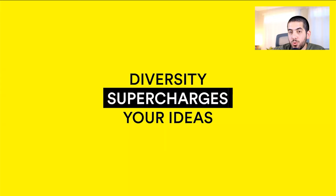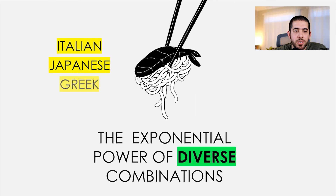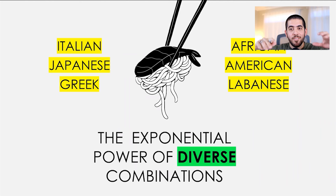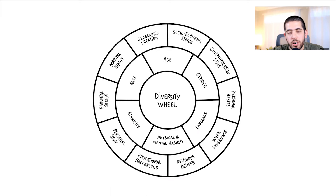Diversity supercharges your ideas. For example, if you're a chef with an Italian dish, a Japanese dish, a Greek dish — six different dishes — the combinations become exponential. Six different dishes can give you over 80 or 90 different combinations. Imagine bringing things that are not related to each other and mixing and matching to come up with cool concepts. Same thing when putting a team together: the more diverse it is, the more innovation happens. It's been proven through studies — it brings different perspectives and ideas to the table when people come from different races, ages, genders, languages, religions. The more diverse you are, the more great ideas you can come up with.